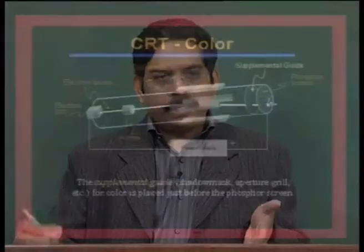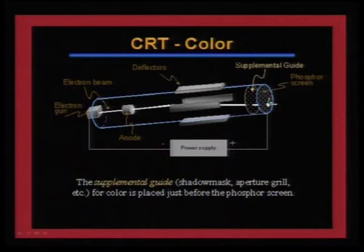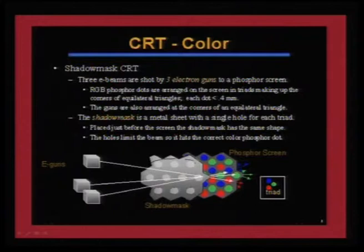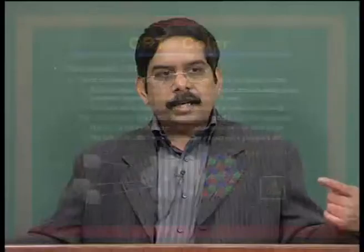For a monochrome display you do not need a shadow mask. In a typical CRT colour monitor with a shadow mask you would not use just one gun but three guns, each maintained at a different potential to excite the corresponding colour.